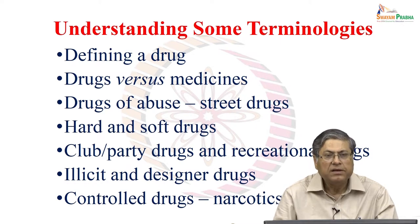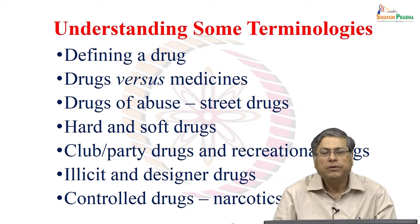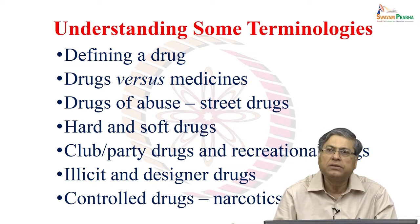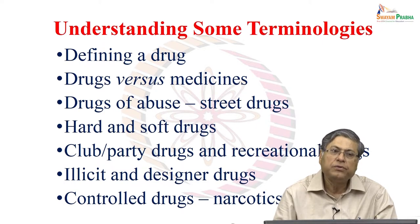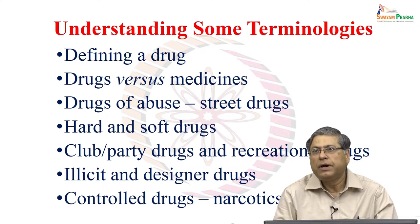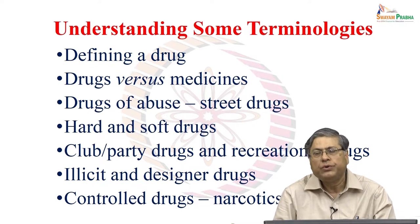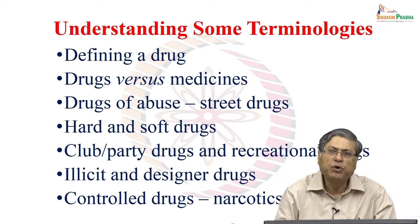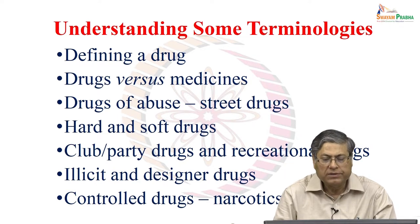There are licit drugs, which are legally approved and mostly used for medical purposes — prescription or even non-prescription medicines used for health reasons — while illicit drugs are illegal drugs. Designer drugs are a type of illicit drug produced or manufactured locally, perhaps in a small corner of a house or a lab, without legal permission — designed in small quantities for local consumption.